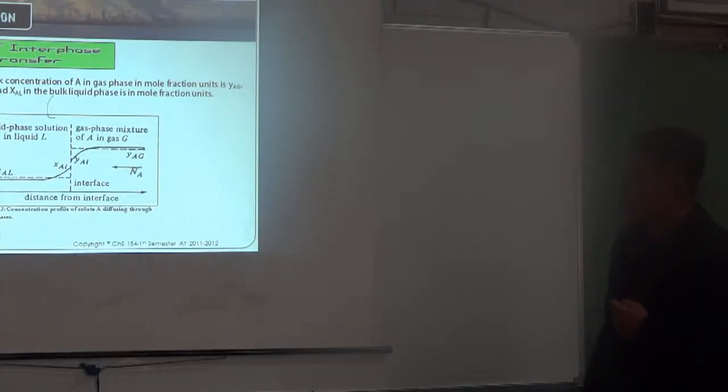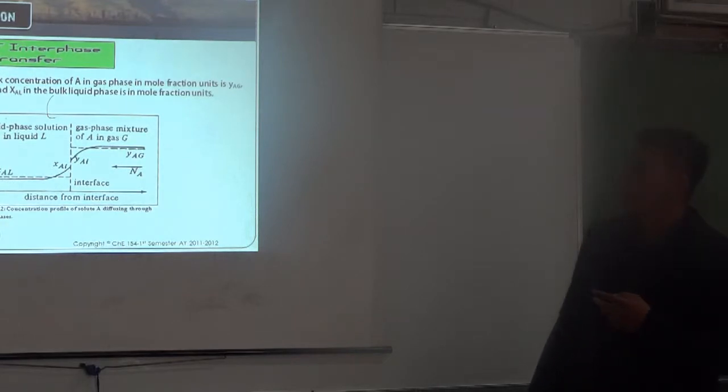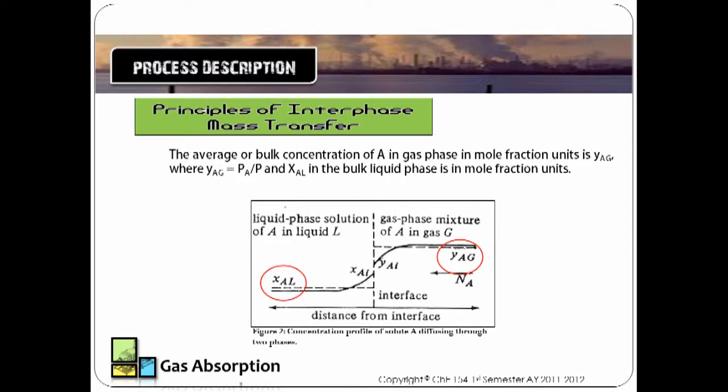The average or bulk concentration of A in gas phase in mole fraction units is denoted by YAG, where YAG equals the pressure over the atmospheric pressure. And XAL in the bulk liquid phase is in mole fraction units, where YAG will be the mole fraction of the gas phase and XAL will be the mole fraction of A in the liquid phase.